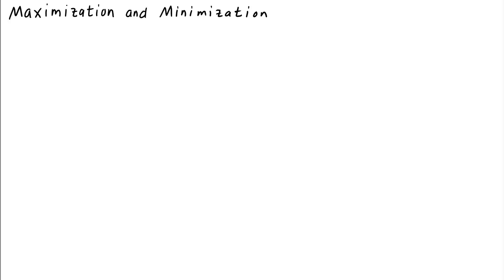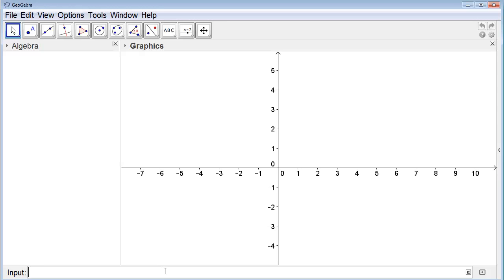In this lecture, we'll show how to use calculus to find maxima and minima of functions. Let's let f be the function x times e to the negative x. Let's start by taking a look at the graph of the function. We can use GeoGebra to graph f simply by typing f into the input box.